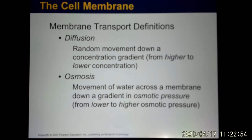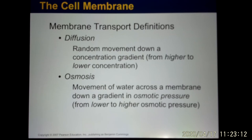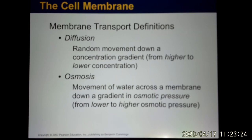Diffusion depends on the concentration gradient — a big word meaning concentration difference — so molecules go from high to low. Water also goes from high water concentration to low water concentration areas. Water diffusion is called osmosis, and the pressure it creates is osmotic pressure. Water always moves to dilute the solute — if there is high solute on one side, water moves toward it in the opposite direction of the solute.